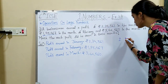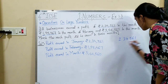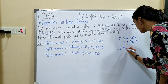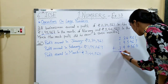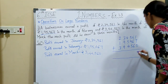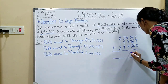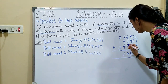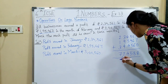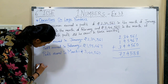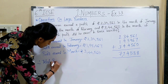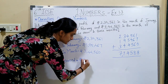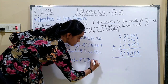So it will be: 2,34,561 plus 1,95,467 plus 3,44,561. Adding all these profits gives us a total. Therefore, total profit earned equals Rs. 7,74,589.